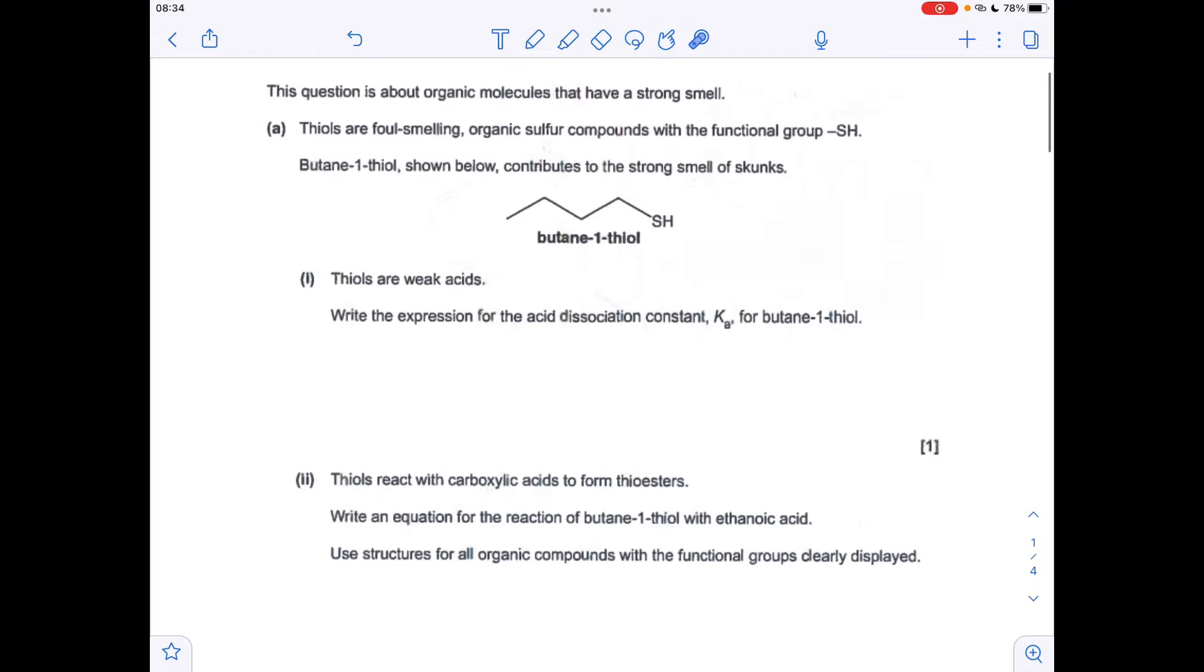Okay, make a start. Part A is a bit weird—it's about these things that aren't on the specification called thiols, but we've got all the information we need. We're told that they're weak acids, so obviously it's that hydrogen there that's going to be donated, so the expression for the acid dissociation constant Ka will look like this.